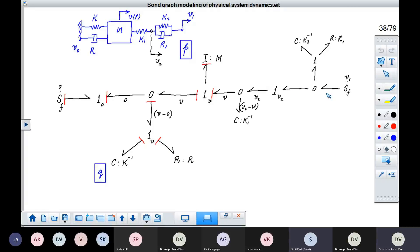This velocity is V1. So this velocity is V1. And this is V2. So this becomes V1 minus V2. So this is common to both these elements, K2, C, K2, and R, R0. And you can, of course, draw their causality in the causal strokes.